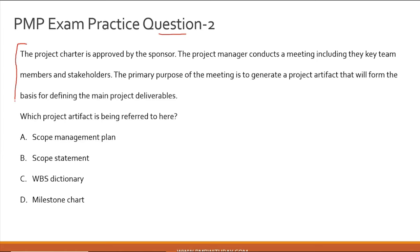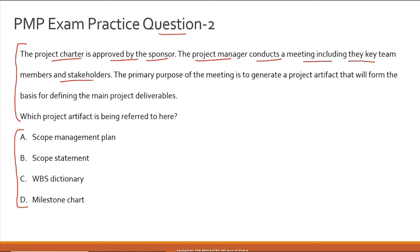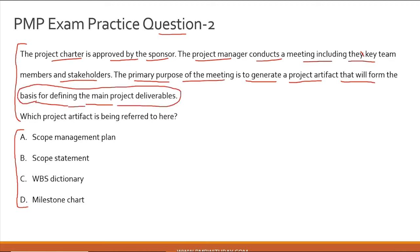Let's move on to question number two. Please read the question and try to answer it before we solve this together — you can pause the video here if you wish. The project charter is approved by the sponsor. The project manager conducts a meeting including key team members and stakeholders. The primary purpose of the meeting is to generate a project artifact that will form the basis for defining the main project deliverables.